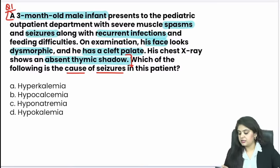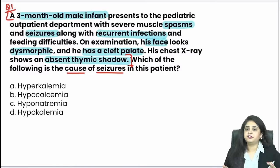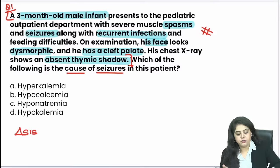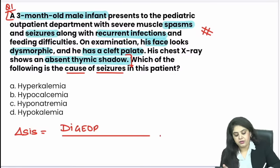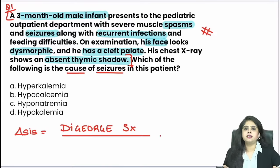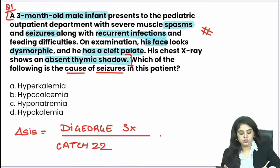What do you think is the cause? Try to correlate it with the disease, because any electrolyte abnormality can be associated with seizures, but you need to put it in the context of this case. The diagnosis is DiGeorge syndrome. We know the famous DiGeorge syndrome is CATCH-22, and in CATCH-22 the answer happens to be hypocalcemia.